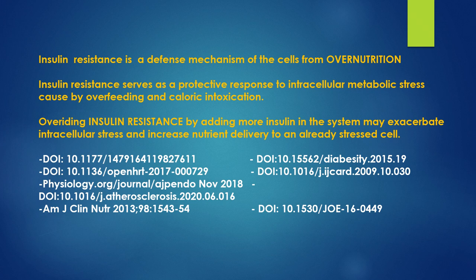Insulin resistance is a defense mechanism of the cells from overnutrition. Insulin resistance, especially the physiologic local one, serves as a protective response to intracellular metabolic stress caused by overfeeding and caloric intoxication. So when you override insulin resistance — in the case of type 2 diabetes or metabolic syndrome — by adding or secreting more insulin, it will exacerbate the intracellular stress and increase nutrient delivery to an already stressed cell. That cell can die.